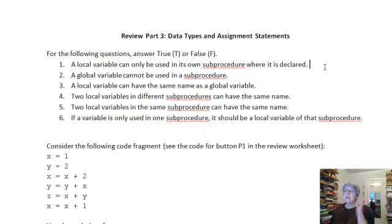A local variable can only be used in its own sub-procedure where it is declared. That is true. A global variable cannot be used in a sub-procedure. Well that's false. Not much point in having global variables. Global means it can be used anywhere,